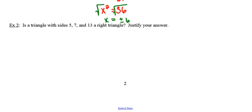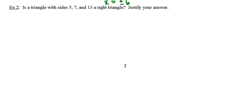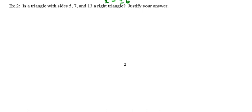In the meantime, I'm going to go on to this last example. In example 2, they want to know whether or not the triangle whose sides have lengths 5, 7, and 13 is a right triangle. And they want us to justify our answer.